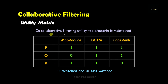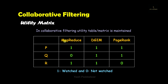Here you can see that we have a table containing users P, Q, and R — these are the users whose information we store. In the column part, we have three YouTube videos: the first video is on MapReduce, the second is on the DGM algorithm, and the third is on the PageRank algorithm. A value of one means the video was watched by that particular user, and zero means it was not watched. User P has watched all three videos, and user R has watched the first two videos.